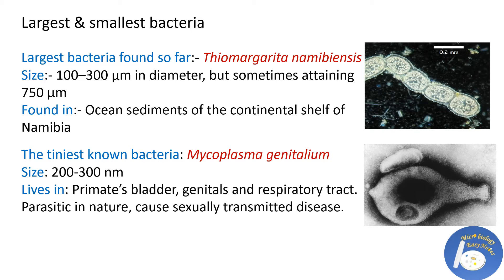The tiniest known bacteria is Mycoplasma genitalium. Its size is 200 to 300 nanometers. It lives and thrives in the bladder, genitals, and respiratory tract. This bacteria is parasitic in nature and causes sexually transmitted disease.